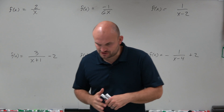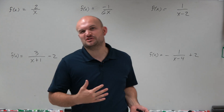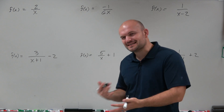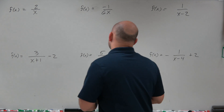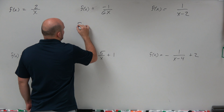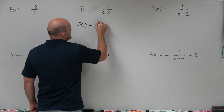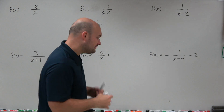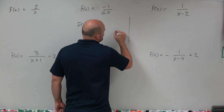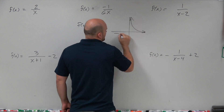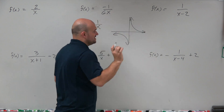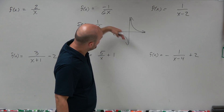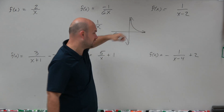When graphing the reciprocal function, on an introductory basis we like to use a table. But with technology, we can easily just type in the parent graph. Let's look at f(x) = 1/x — that's the parent graph with no transformations. What we can see is that graph is going to look something like this. It's what we call a hyperbola; it has these two separate curves.